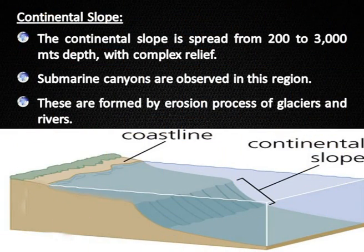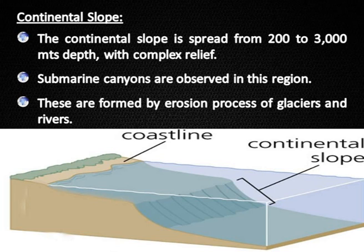Continental Slope: The continental slope spreads from 200 to 3,000 meters depth with complex relief. Submarine canyons are observed in this region, formed by the erosion processes of glaciers and rivers.